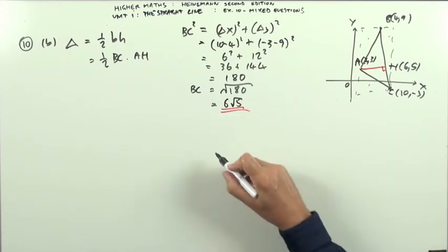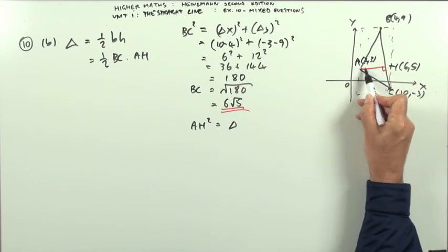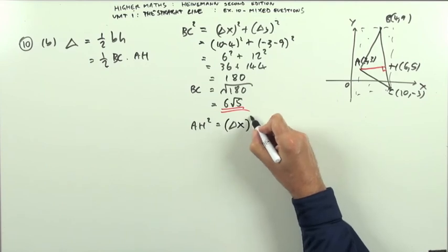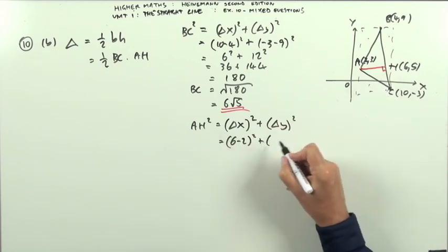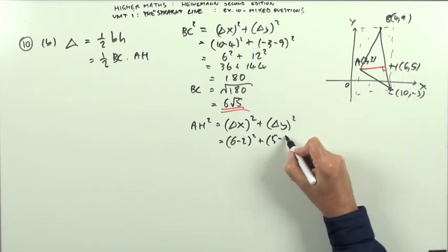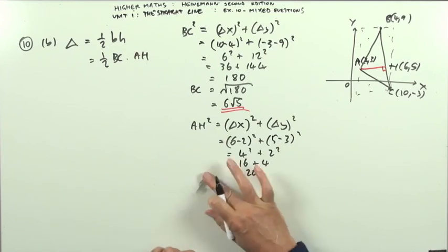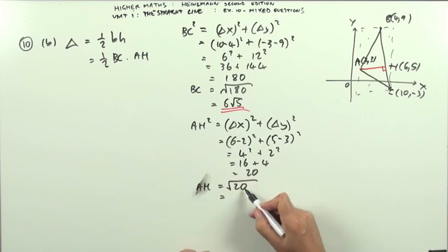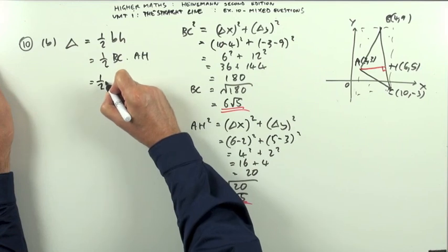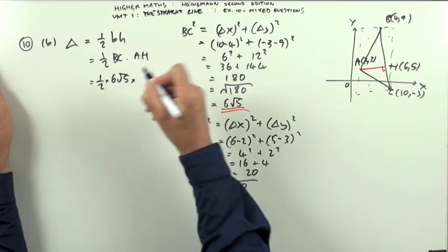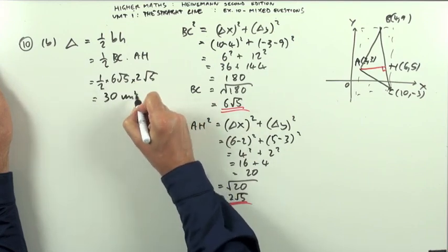For AH: going from A(2,3) to H(6,5), the difference in x is 6 − 2 = 4, the difference in y is 5 − 3 = 2. So AH² = 4² + 2² = 16 + 4 = 20, giving AH = √20 = 2√5. Finally, the area of triangle ABC = ½ × BC × AH = ½ × 6√5 × 2√5 = ½ × 6 × 2 × 5 = ½ × 60 = 30 square units.